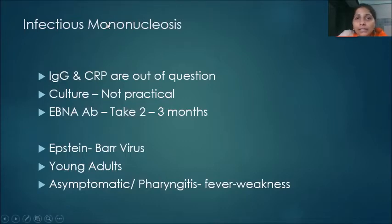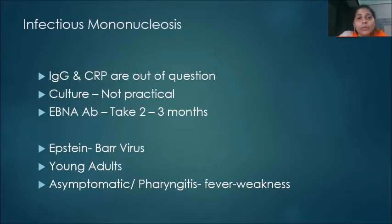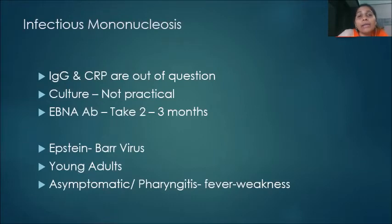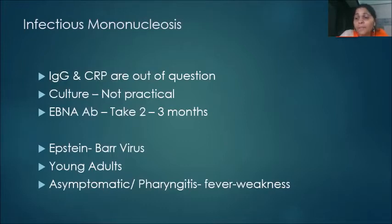Infectious mononucleosis is caused by Epstein-Barr virus, which belongs to the Herpesviridae family. Generally the disease is predominant in young adults. Many times it can be asymptomatic, or it can present as pharyngitis associated with fever and weakness. This is the classical symptomatology of infectious mononucleosis when the person is not asymptomatic.